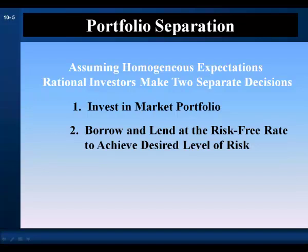This result establishes what financial economists call the portfolio separation principle. The principle states that assuming homogeneous expectations, rational investors make two separate decisions. First, all investors invest in the market portfolio — regardless of their personal attitude towards risk, all investors invest in the same risky asset, the market portfolio. Second, having made their investment in risky assets, investors then borrow and lend at the risk-free rate to obtain their desired level of risk.